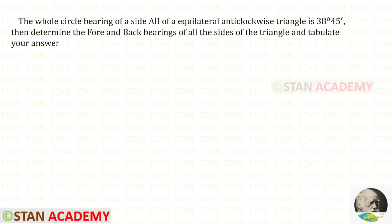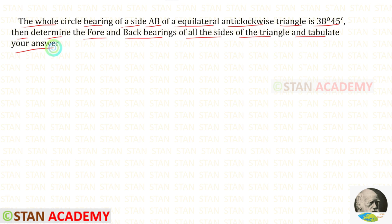Hello everyone. Today we are going to do a problem based on compass surveying. Let us read the question. The whole circle bearing of side AB of an equilateral anti-clockwise triangle is 38 degrees 45 minutes. Determine the fore and back bearings of all the sides of the triangle and tabulate your answer.